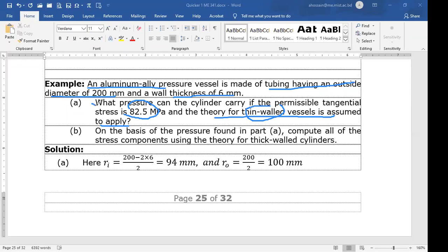Then, on the basis of pressure found in part A, compute all the stress components. That means compute all three stress components: sigma_R, sigma_T, and sigma_L using the theory of thin wall cylinder. This is our problem.